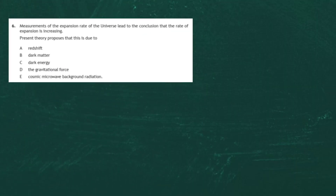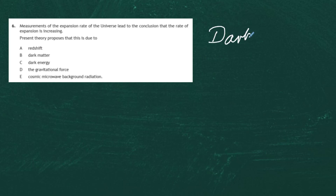Question 6 from Section 1 of the 2017 Higher Physics exam. Measurements of the expansion rate of the universe lead to the conclusion that the rate of expansion is increasing. This present theory proposes this is due to dark energy — energy we have not seen in the world of physics. If you get the word 'dark' in front of something it usually means we don't understand what's happening. The answer to question 6 is C.